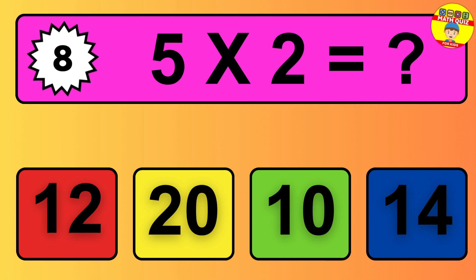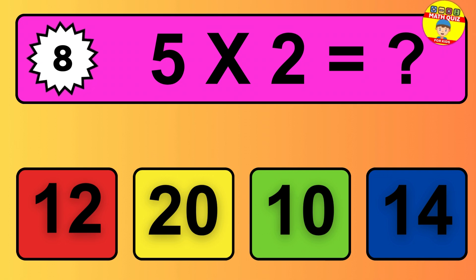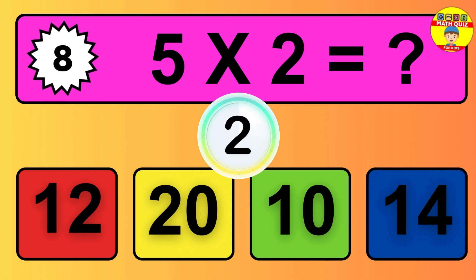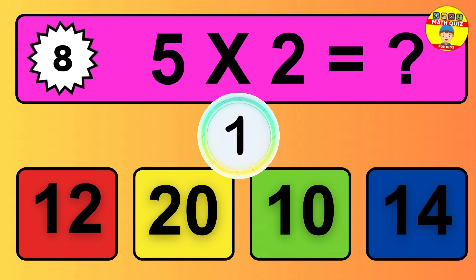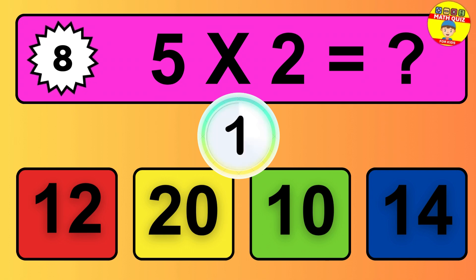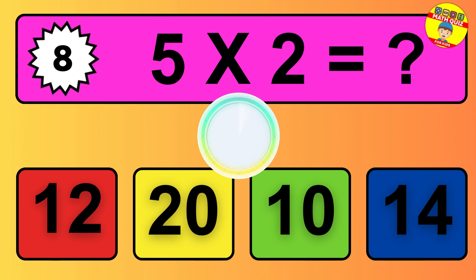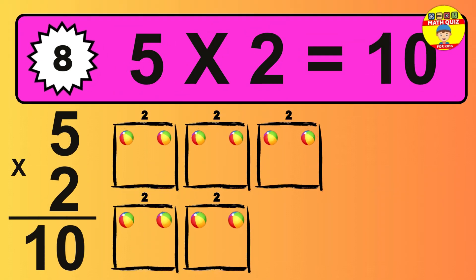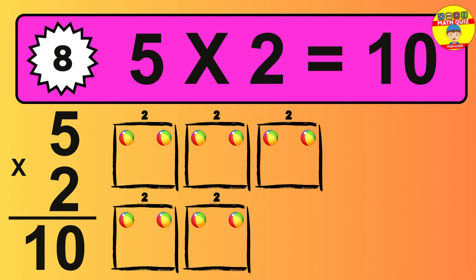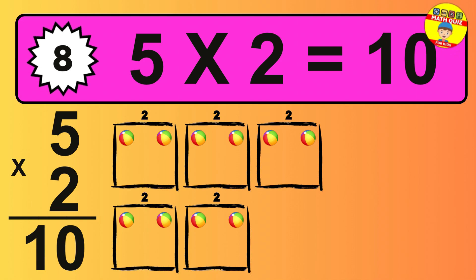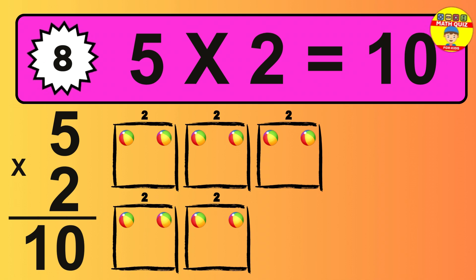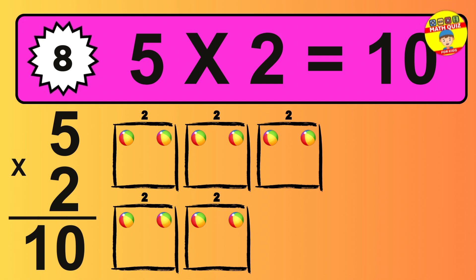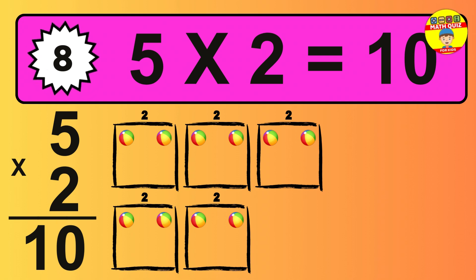Question 8. 5 times 2 equals what? The answer is 5 times 2 is 10. To calculate, we have 5 groups with 2 balls each one. So how many balls do we have? 10 balls.